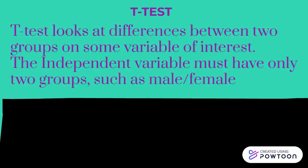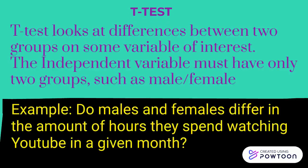The second one is the t-test. The t-test looks at differences between two groups on some variable of interest. The independent variable must have only two groups, such as male and female. For example: do males and females differ in the amount of hours they spend watching YouTube in a given month?